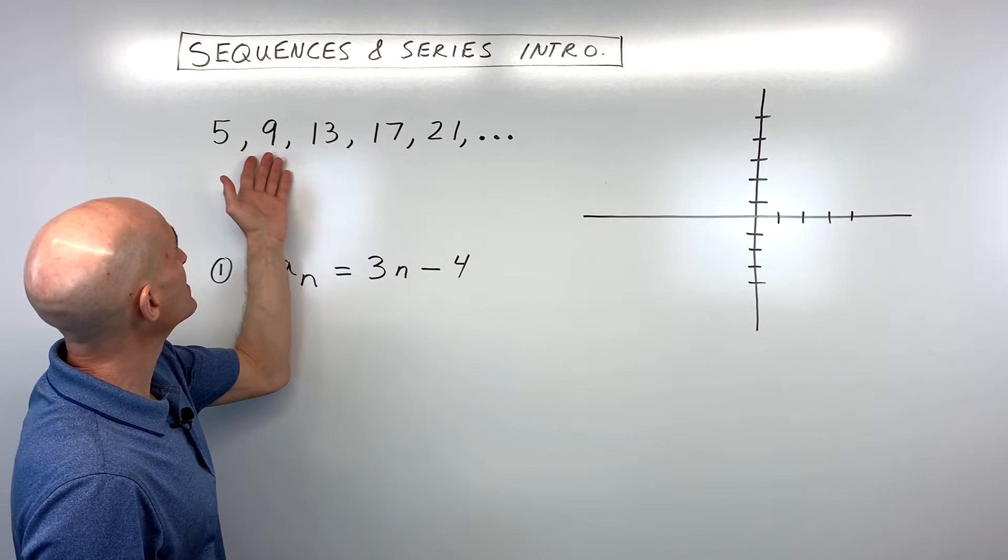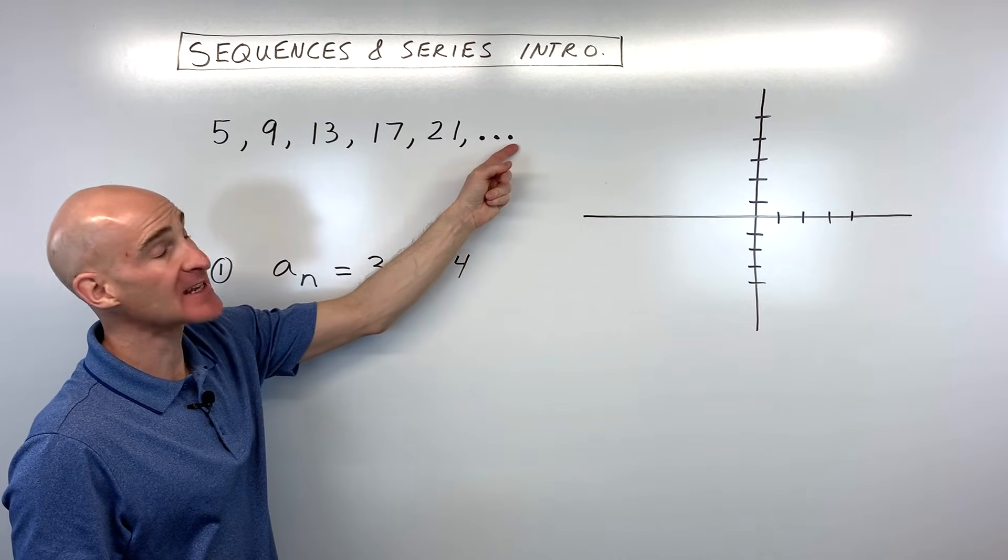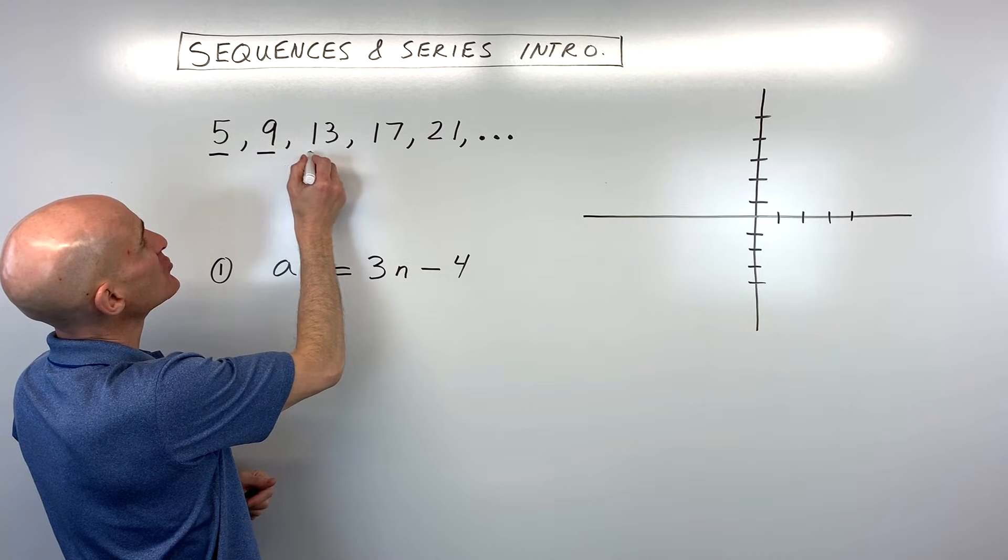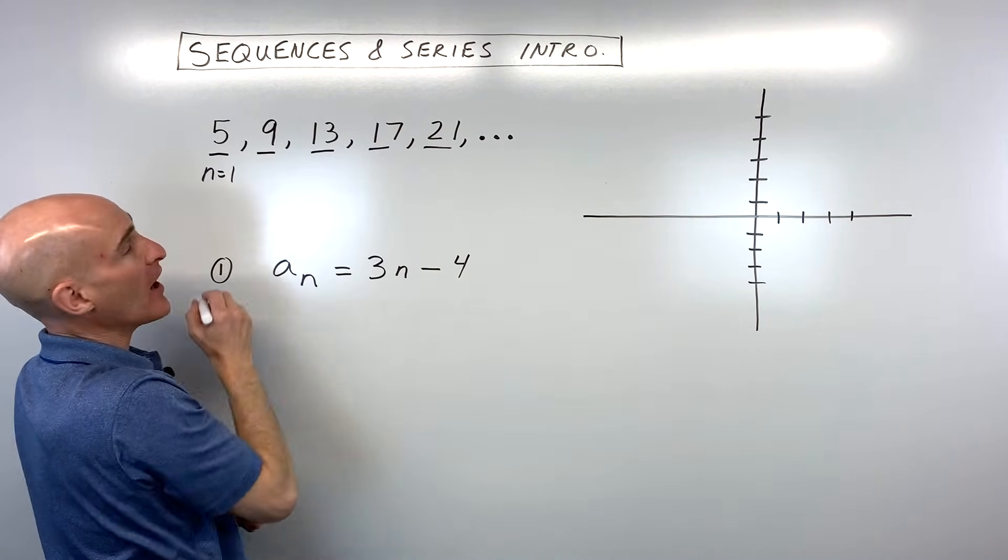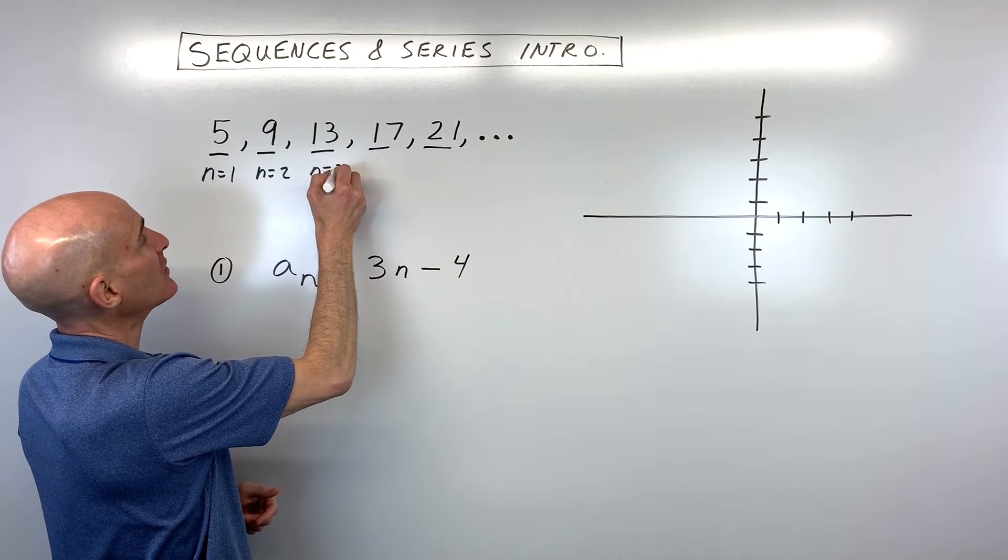Let's look at this first sequence here we have: 5, 9, 13, 17, 21, dot dot dot. This goes on forever and ever. But what we want to talk about first is a little bit about the terminology. This term here we call n equals 1 for the first term, and then this one here is n equals 2, n equals 3, etc.